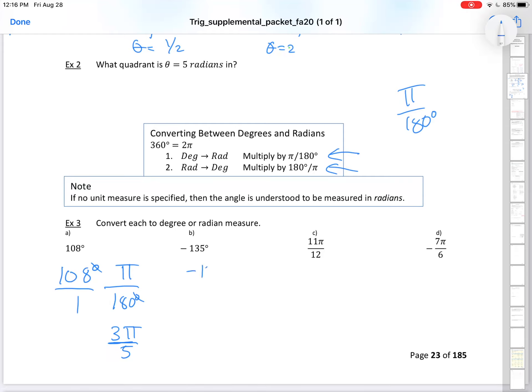Negative 135 degrees - I don't want degrees. I'm going to put the 180 degrees on the bottom. You have negative 135π over 180. What's that going to reduce down to? Negative 3π/4.